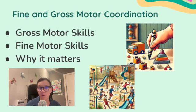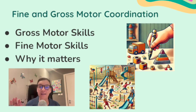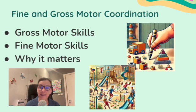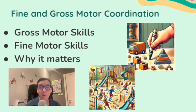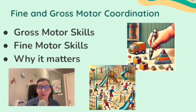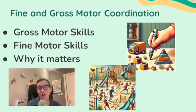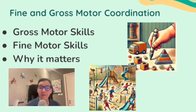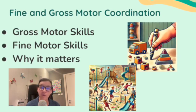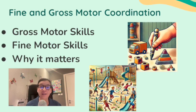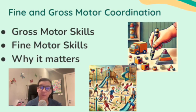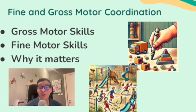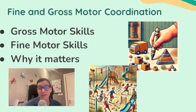Now let's look at fine motor skills. These involve smaller, precise movements, often using hands and fingers — for example, picking up small objects like puzzle pieces, or holding a pencil or crayon for drawing or writing. Fine motor skills are crucial for activities like writing, drawing, and self-care, for example buttoning a shirt. A preschooler practicing how to tie their shoes develops independence and problem-solving skills.